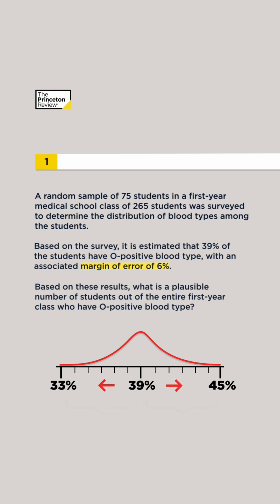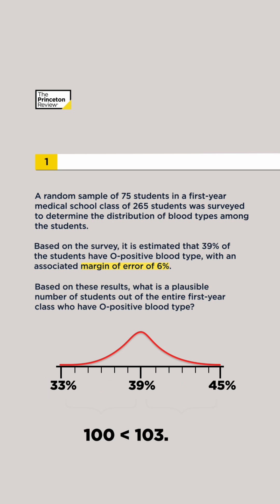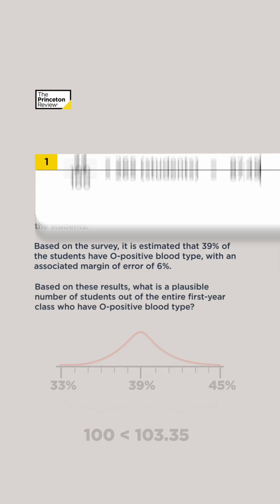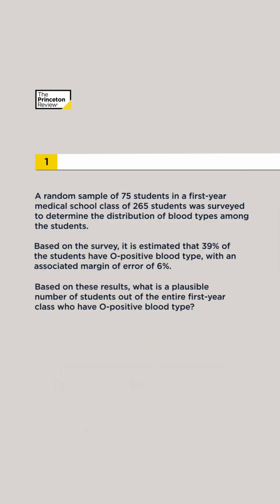That is, between 33% and 45%. Since 100 is less than 103.35, we only have to check the lower bound. 33 divided by 100 times 265 equals 87.45. Since 100 is between 87.45 and 103.35, it is a plausible number.